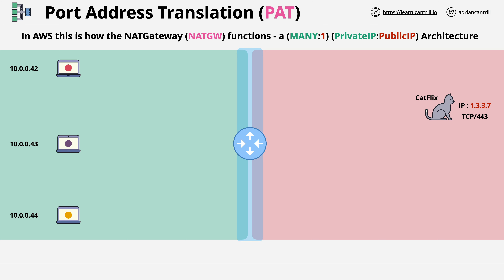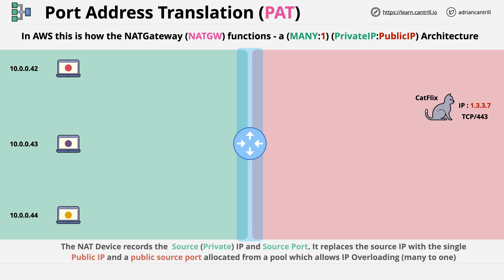The way that port address translation, or PAT, works is to use both IP addresses and ports to allow multiple devices to share the same public IP. Every TCP connection, in addition to a source and destination IP address, has a source and destination port. The destination port for outgoing connections is important, because that's what the service runs on.